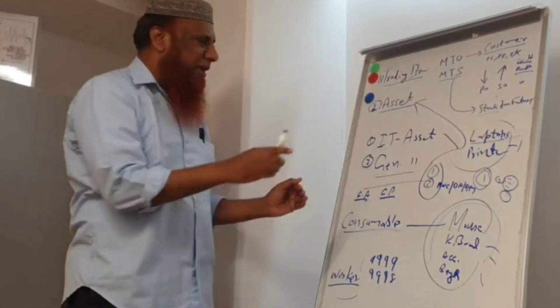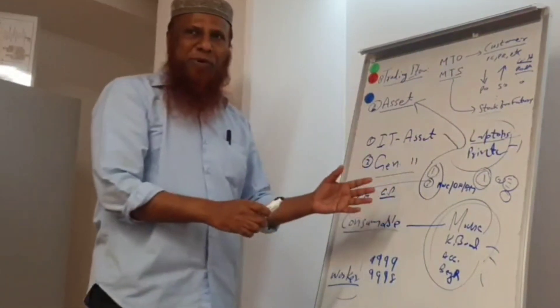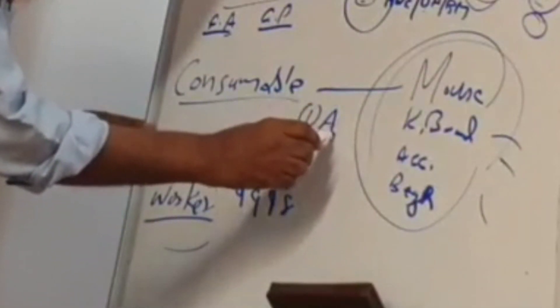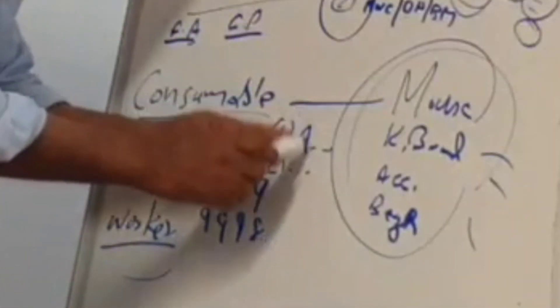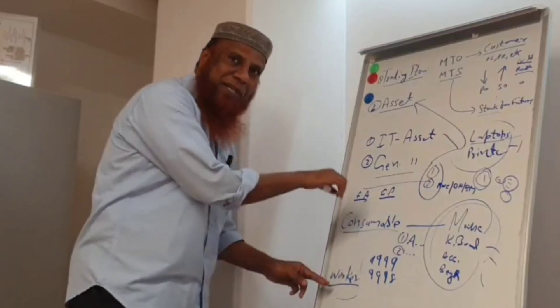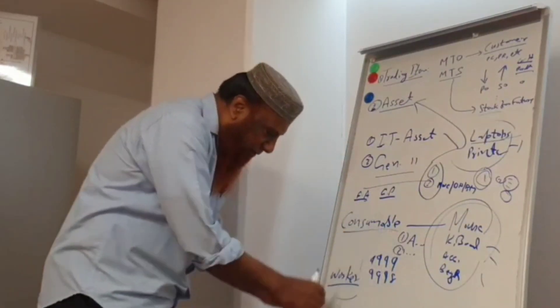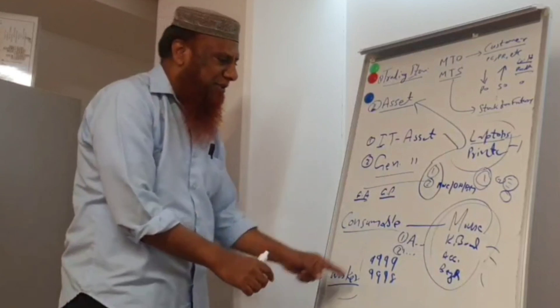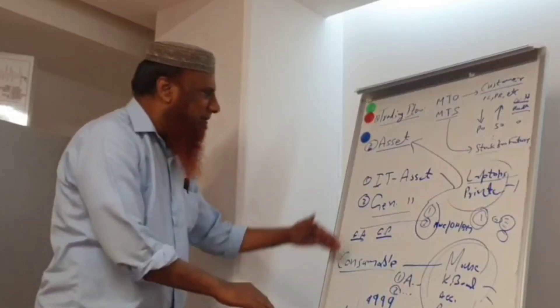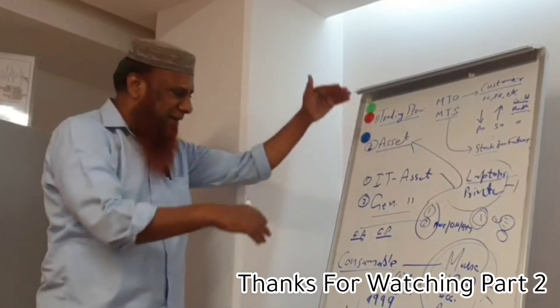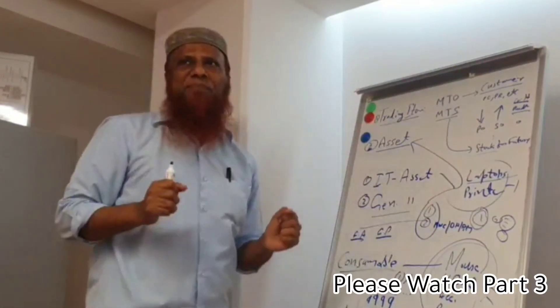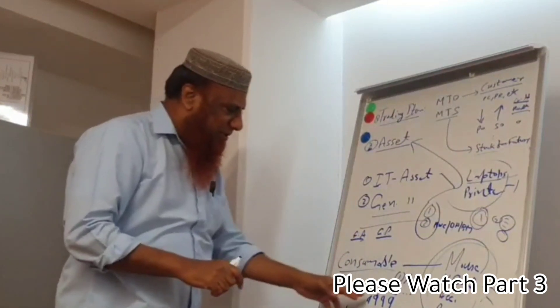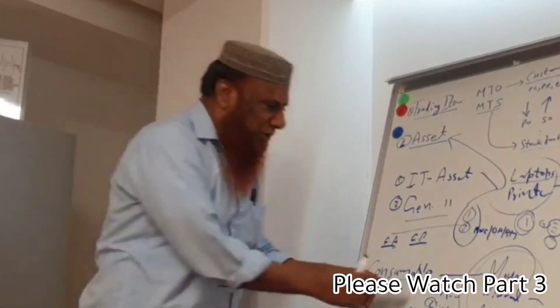Inside the item code, we distinguish each item per person. For example, if there are two persons — person number one is Anis, person number two is you — then for person number one, inside the item we change the worker code and write Anis's code. Everything will come based on Anis's business department automatically. Similarly, for the second person, everything will come under them.